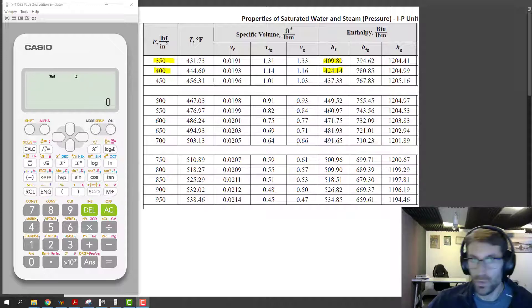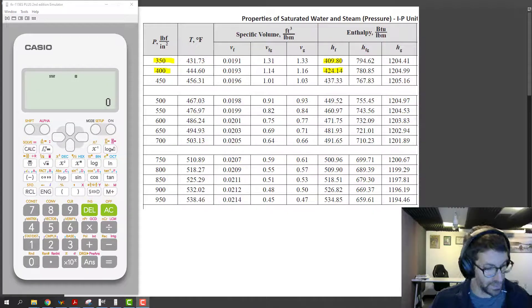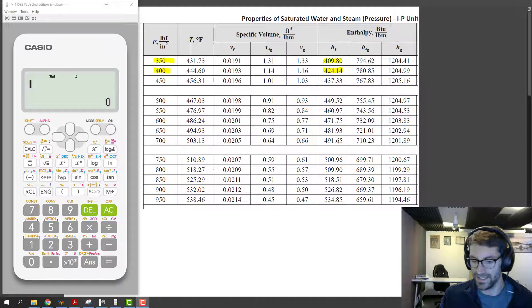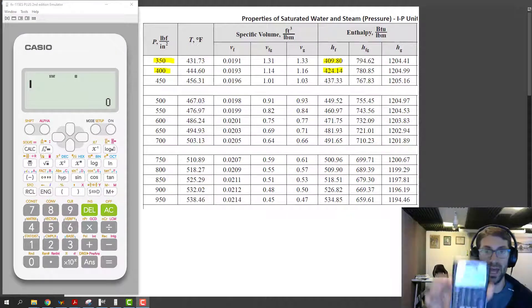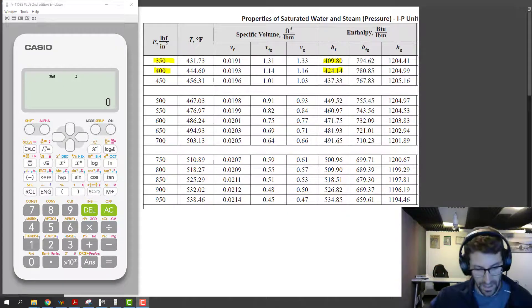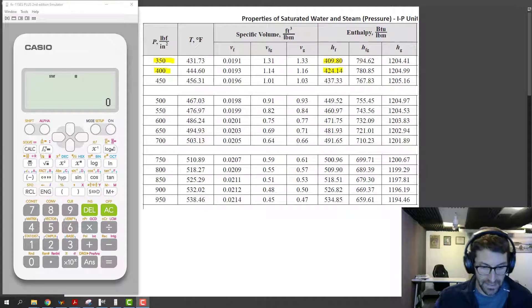And I have two, actually, because redundancy. I have the TI-30X2S and then I also have the Casio FX-115ES Plus. And the TI, as far as I know, doesn't interpolate. If anybody knows otherwise, let me know.